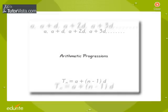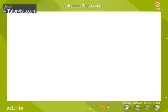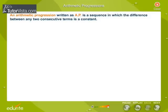Arithmetic Progressions. An arithmetic progression written as AP is a sequence in which the difference between any two consecutive terms is a constant.